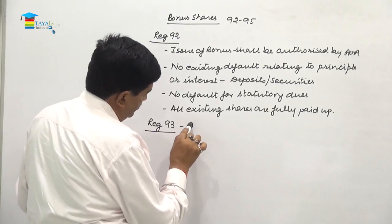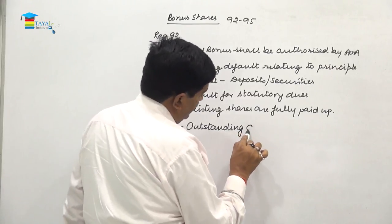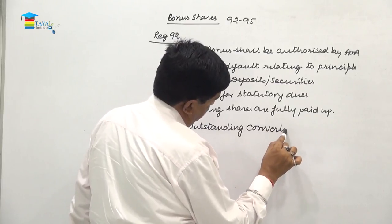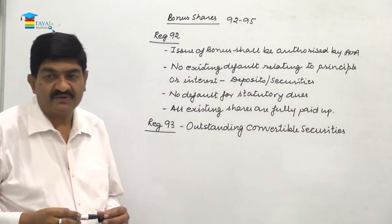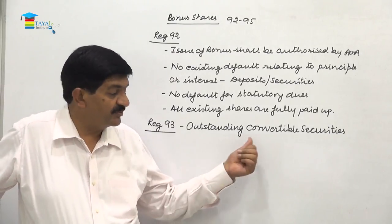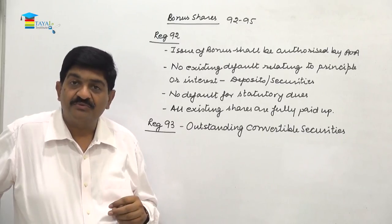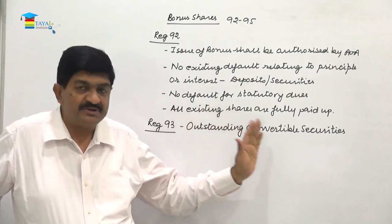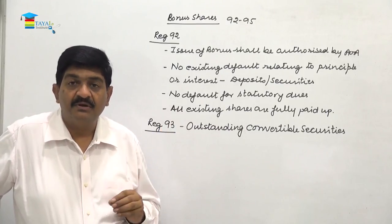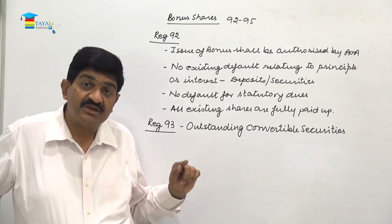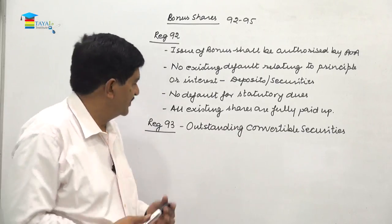Regulation number 93 addresses outstanding convertible securities. When convertible securities are outstanding and conversion is pending, if bonus shares are issued, those holders would not receive bonus shares, adversely affecting their interest. The regulation says: either do not issue bonus shares until conversion takes place, or make a provision for issuing bonus shares on those shares which will result from the conversion of the convertible securities.